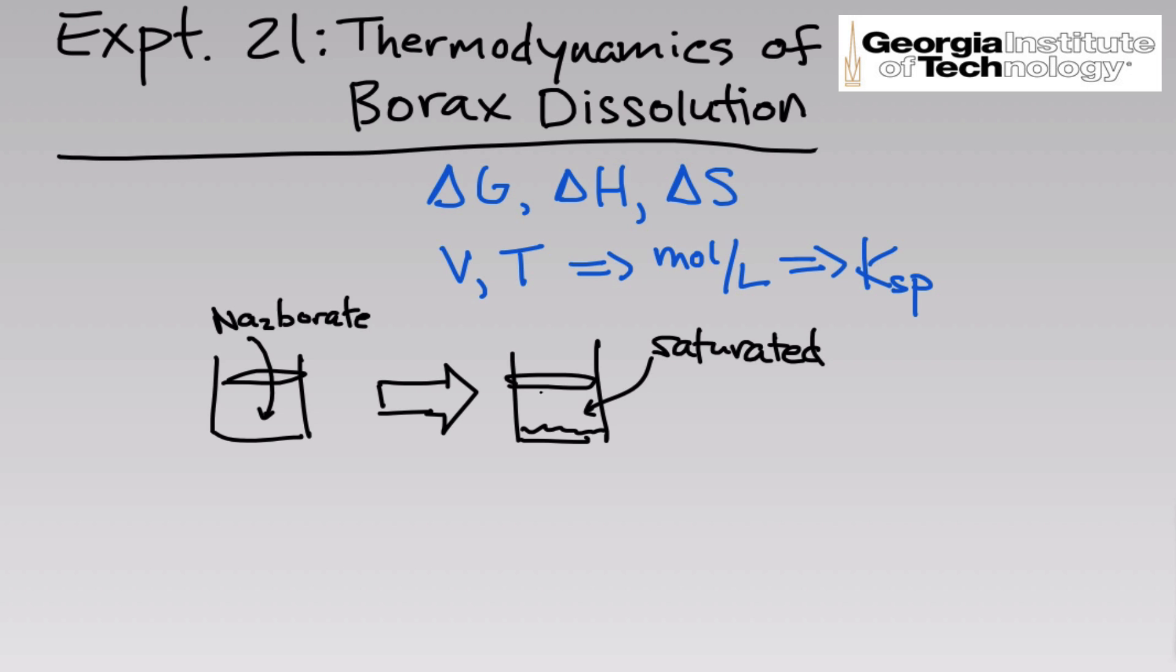They'll pull aliquots from the top of these solutions and titrate them to determine concentrations. This will be done at three different temperatures: zero degrees, room temperature, and 50 degrees C. For the 50 degree C beaker, make sure it does not go above 50 degrees C, because the sodium borate will start to break down around 60 C, and you don't want that to happen because that will mess with the equilibrium constant.